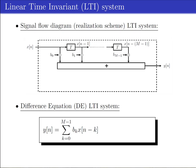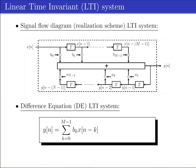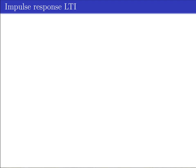The figure shows a basic LTI system, which can be described by the given difference equation with coefficients b0 until bm-1. The LTI system that we consider in this video can also contain feedback loops, which changes the difference equation accordingly. The coefficients a1 until an-1 are used for the feedback path.